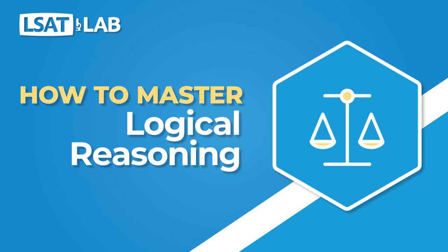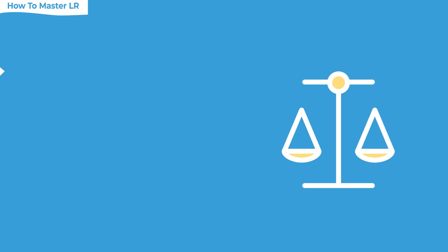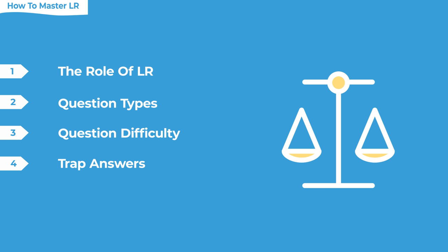Hi, this is Matt at LSAT Lab, and today's lesson is on how to master the logical reasoning section. It's a really important section type since there are twice as many sections of logical reasoning as any other section type. In today's lesson, we're going to cover the role of the logical reasoning section on the LSAT, the different kinds of question types, how they make questions more or less difficult, how to use trap answers to eliminate wrong answers, and how to use reasoning structures to better identify the gap in the argument.